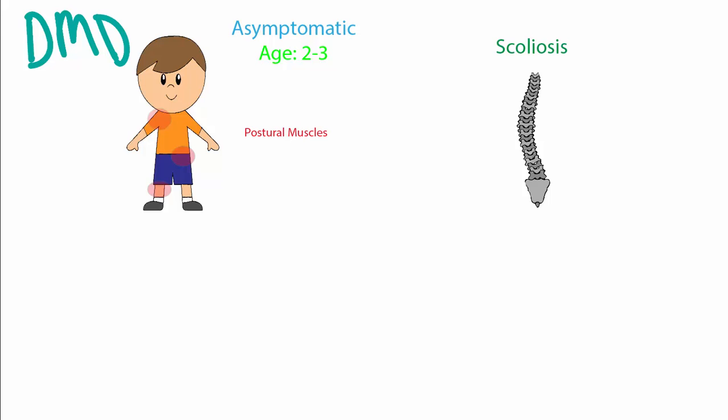Scoliosis is very common in those who have DMD because of an imbalance between the agonist and antagonistic muscles that support the spine due to the degeneration of those muscles. Most people with DMD are in a wheelchair between the ages of 7 to 12.